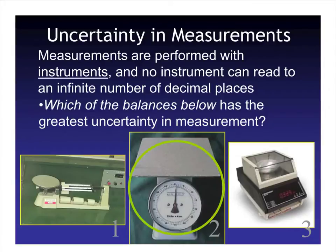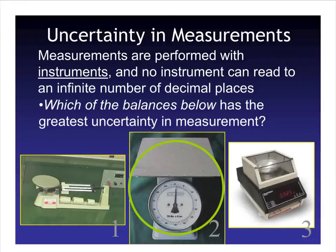When we do measurements, there is going to be some uncertainty. Measurements are performed with instruments — some sort of tool — and no instrument can read to an infinite number of decimal places. The balance with the greatest uncertainty in measurement is the one with the least decimal places. When using a digital scale in lab, if it has three decimal places, make sure to write all three decimal places on your paper, including every single number the scale gives you, because that tells you how accurate you can be with your answers.